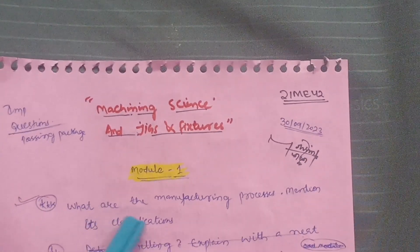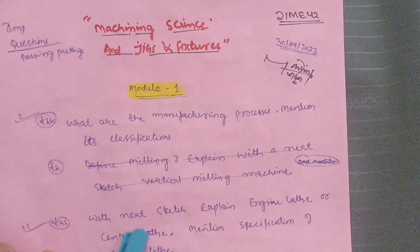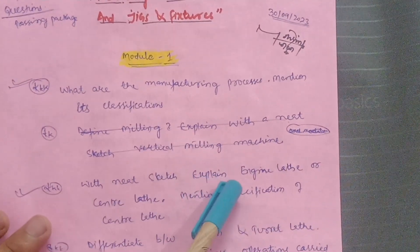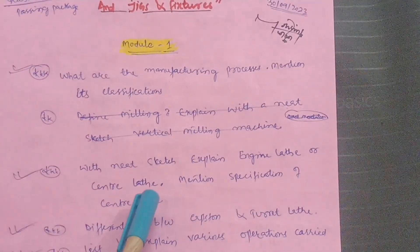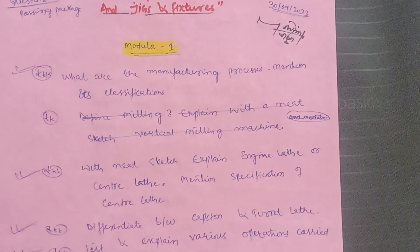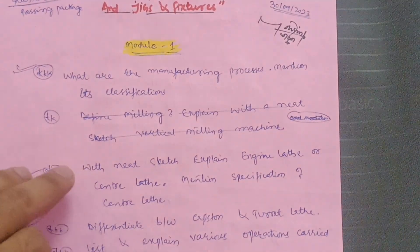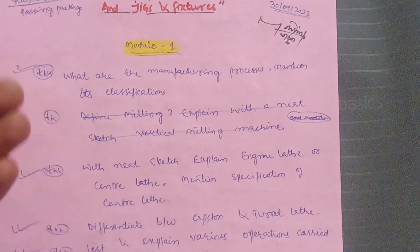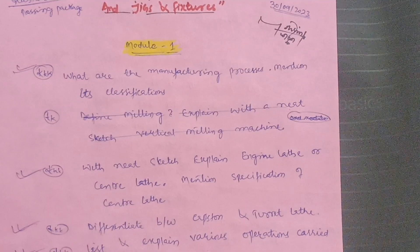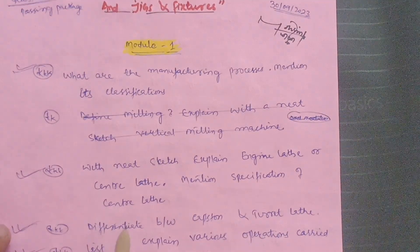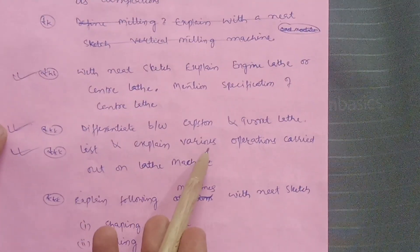In Module 1, the important questions are: what are the manufacturing processes and their applications, and with a neat sketch explain the engine lathe or center lathe and mention its specifications. This is the most important question — focus more on the diagram. It will be a 10 or 14 marks question in the examination. You have to draw the lathe machine and define the parts of the engine lathe.